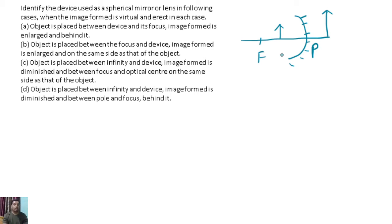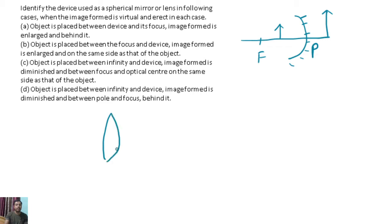Next case: the object is placed between focus and device, and the image formed is enlarged and on the same side. When you see it on the same side, this case is the convex lens.